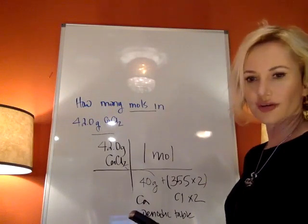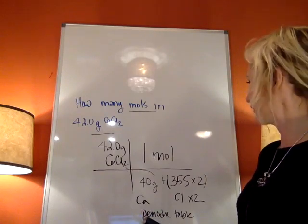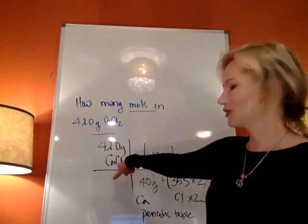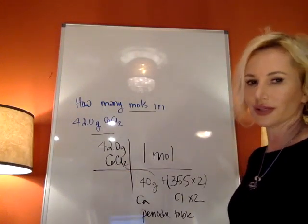We don't use Avogadro's number because they didn't ask how many atoms or molecules. In this case, if they're being really formal, calcium chloride is an ionic compound and they call it a formula unit.